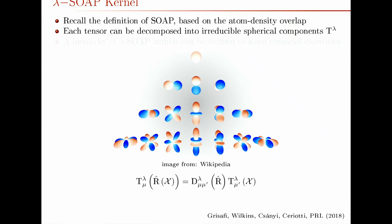If you have a tensor and split it into components that transform like spherical harmonics — a scalar transforms as an L=0 spherical harmonic, a vector like a force or dipole moment transforms as an L=1 spherical harmonic, and a symmetric polarizability has an L=0 component which is the trace and an L=2 component which is everything else — we know how these spherical tensors transform. If you have one corresponding to environment fancy X and apply a rotation R, all you have to do is multiply that tensor on the left by the Wigner-D matrix corresponding to this rotation — a calculable function of the Euler angles.